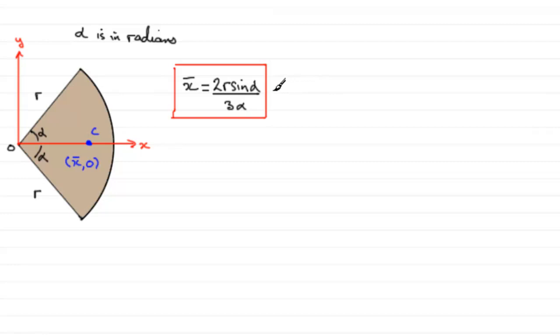Now if we take the special case of a sector where the angle alpha is pi upon 2 radians, the equivalent of 90 degrees, then the shape that we get is obviously a semicircle.